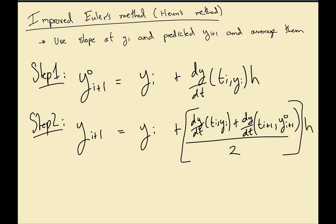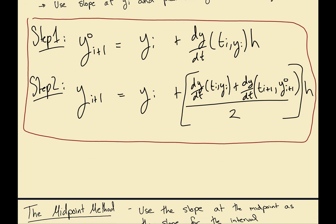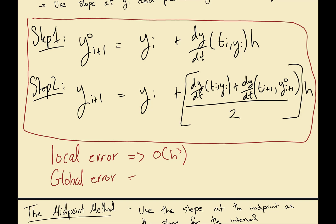We already saw how to iterate that second correction equation. One thing I forgot to mention last class is that the local truncation error is on the order of h³ — a bit better than just Euler's method — and the global error is on the order of h².